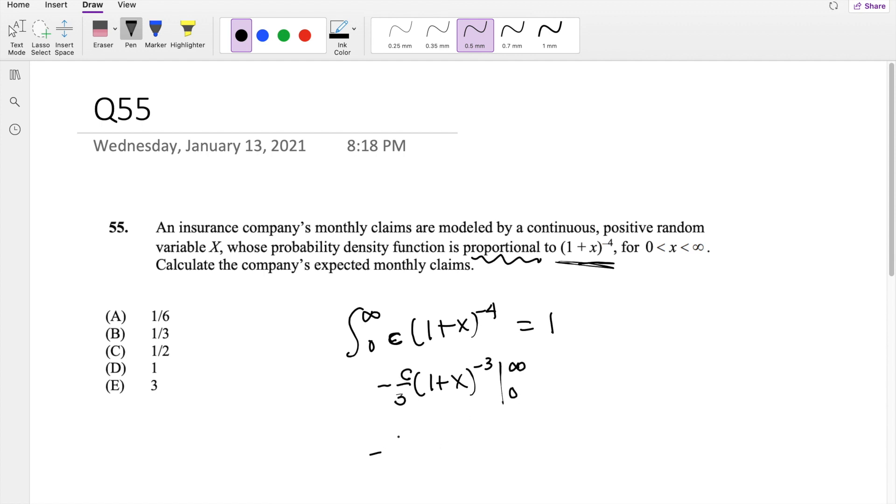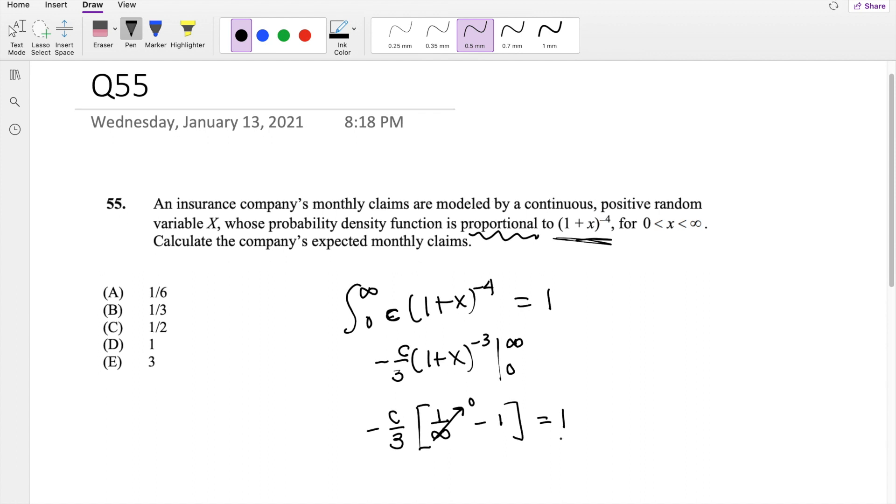When you plug in the upper limit here, I'm just going to take c over 3 out. That's technically saying 1 over a really, really big number, because x to negative 3 makes it in the denominator. So 1 over a really, really big number is just 0, minus when you plug in 0, you just get 1. So then you get, this is equal to 1. Two negatives make a positive, so you get c over 3 equals 1. So then c must be equal to 3.